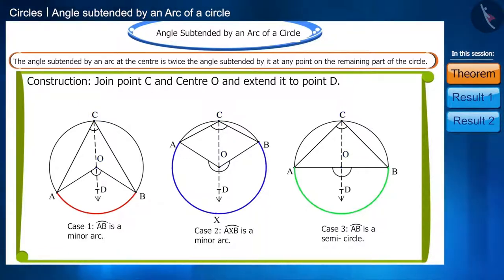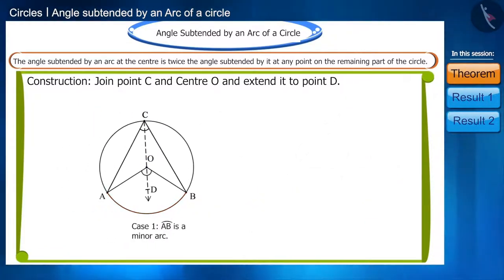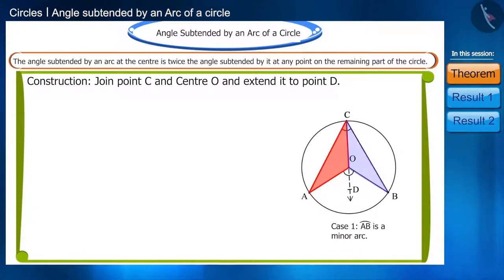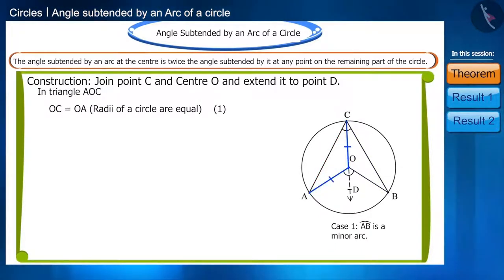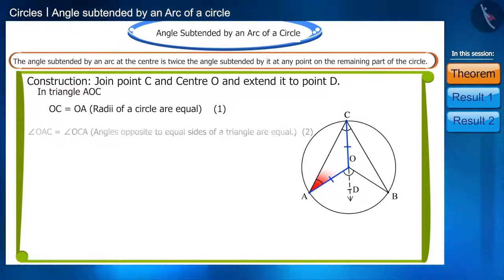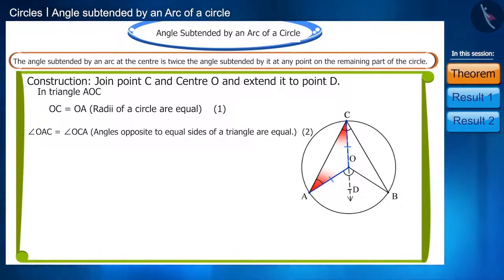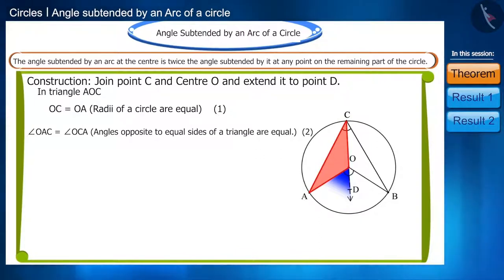Friends, observe that in the first case we get two triangles: triangle AOC and triangle BOC. In triangle AOC, OC and OA are equal as they are the radii of the circle. Therefore, angles OAC and OCA will be equal, because angles opposite to equal sides of a triangle are equal.